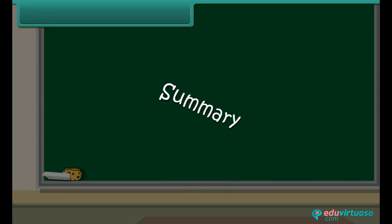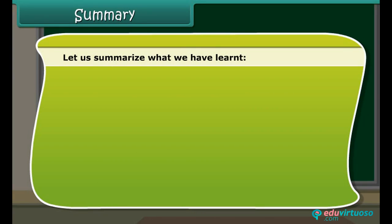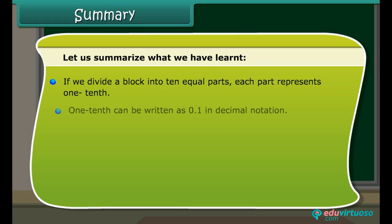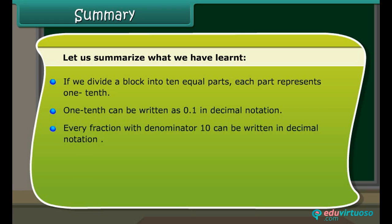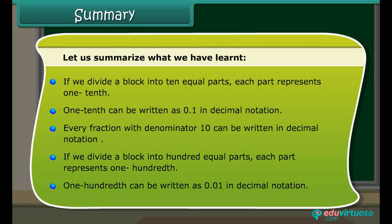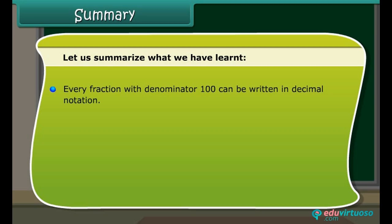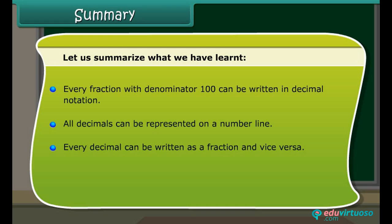Summary. Let us summarize what we have learned. If we divide a block into 10 equal parts, each part represents one-tenth. One-tenth can be written as 0.1 in decimal notation. Every fraction with denominator 10 can be written in decimal notation. All decimals can be represented on a number line. Every decimal can be written as a fraction and vice versa. Any two decimals can be compared among themselves.